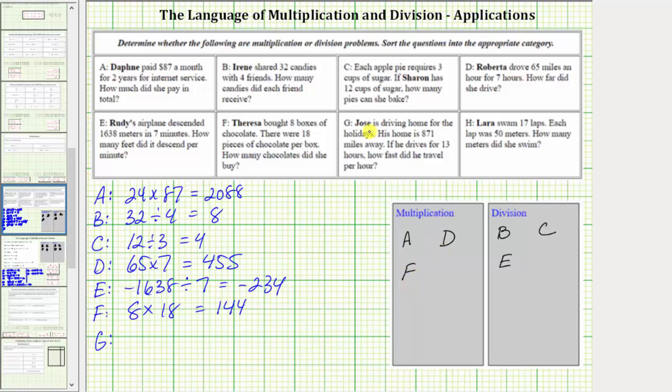For G, Jose is driving home for the holidays. His home is 871 miles away. If he drives for 13 hours, how fast did he travel per hour? From the given information, we have a rate of 871 miles per 13 hours, which represents a quotient. So if we have 871, and we divide by 13, this will tell us how fast he traveled per hour.